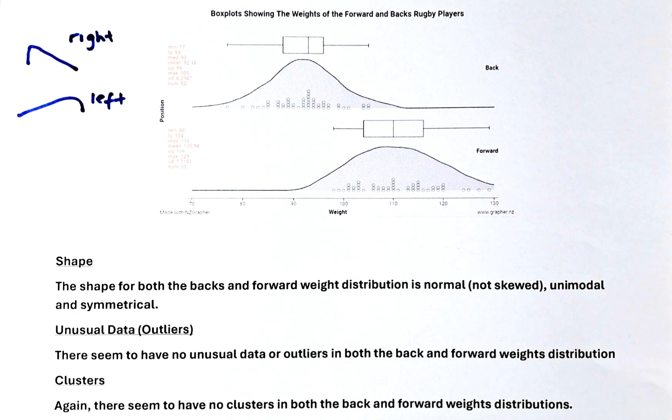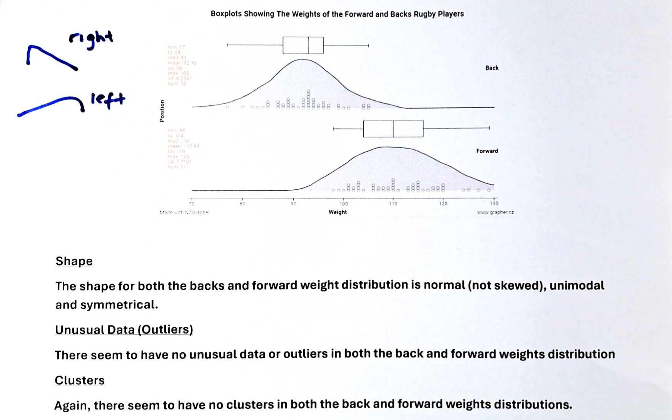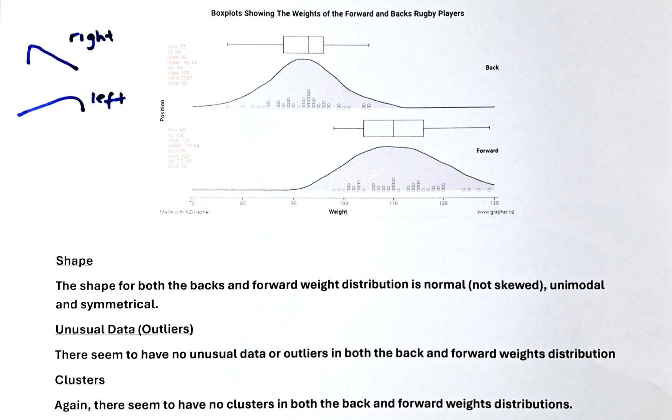First we're talking about the shape. Second we look at the outliers, also called the unusual data, and last but not least we are going to talk about the cluster.